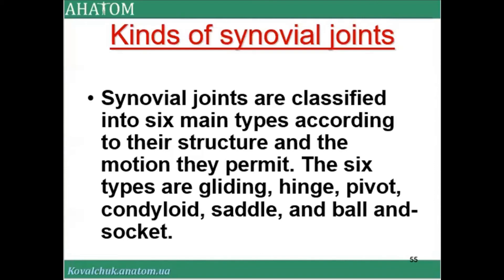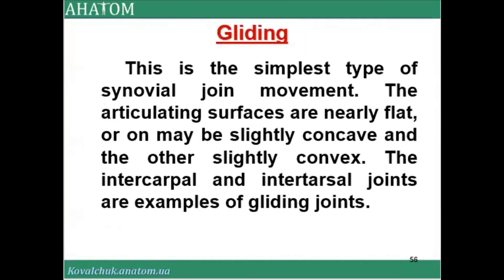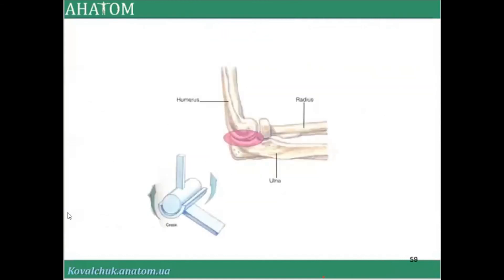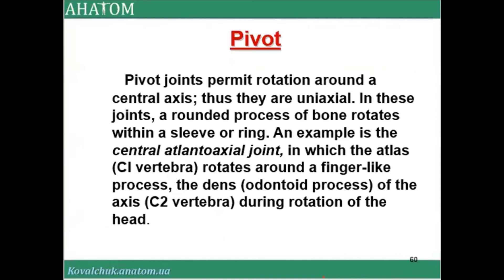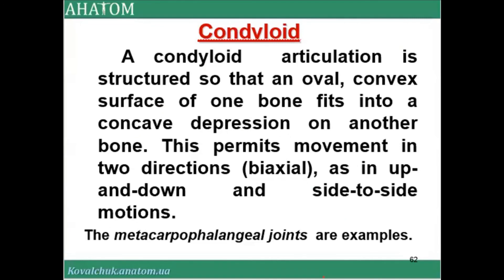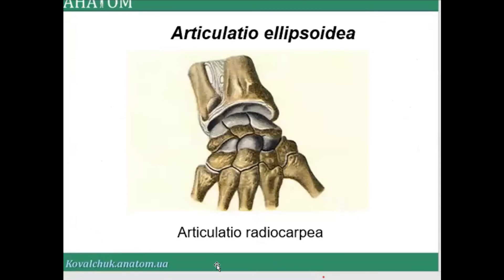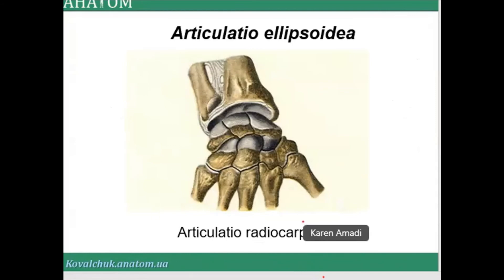Information about human anatomy can also be presented in a different form through MRI and X-ray examination. For example, an ellipsoid joint is the articulatio radiocarpalis. A saddle joint is another type, and then there is also the ball-and-socket form.